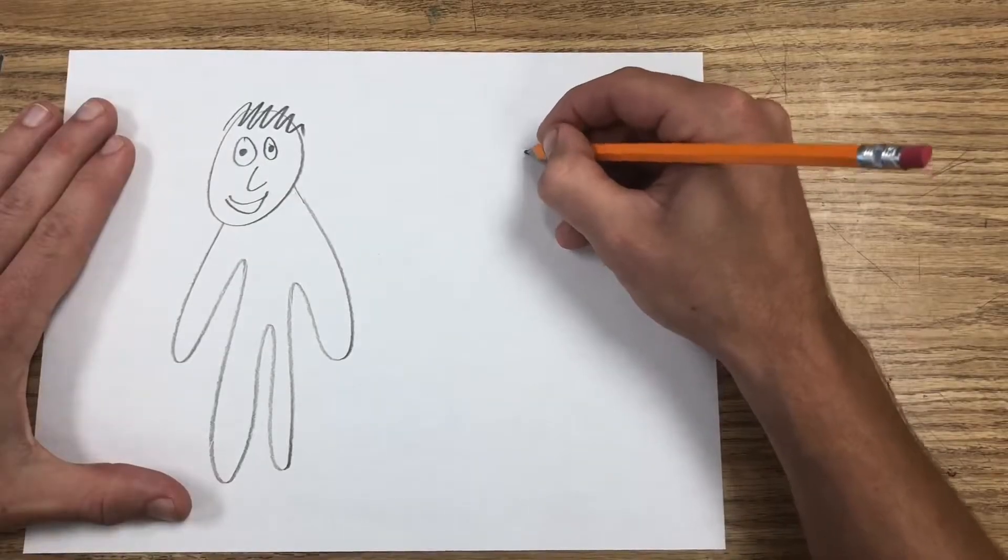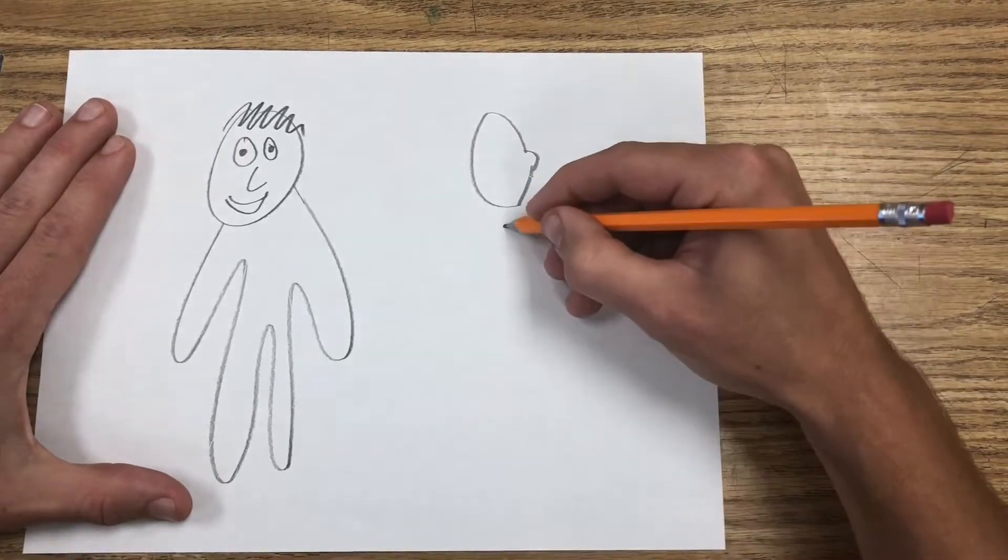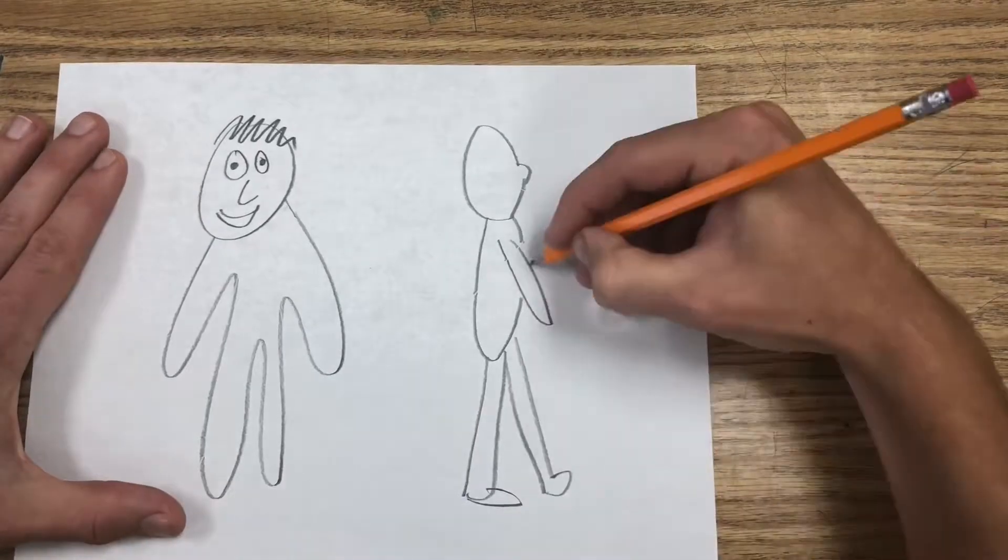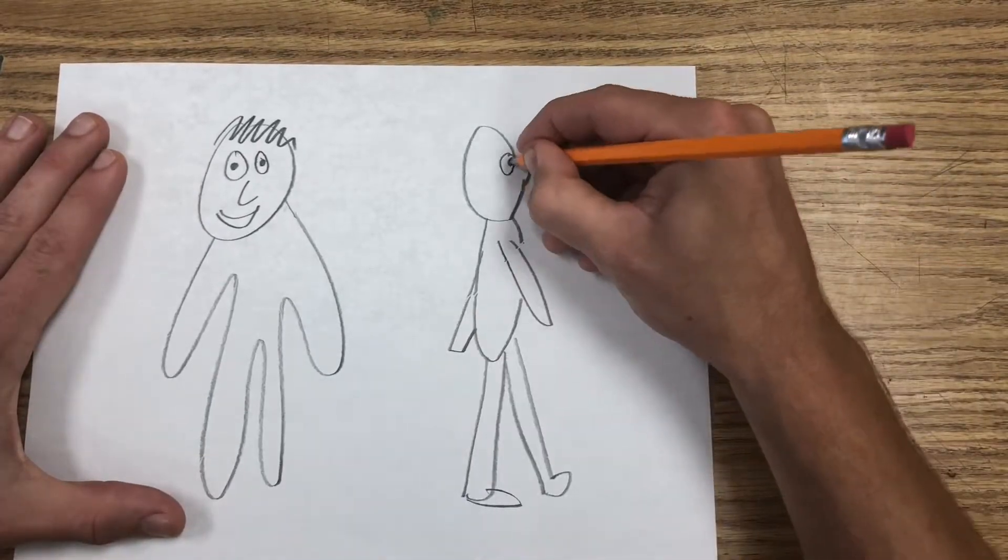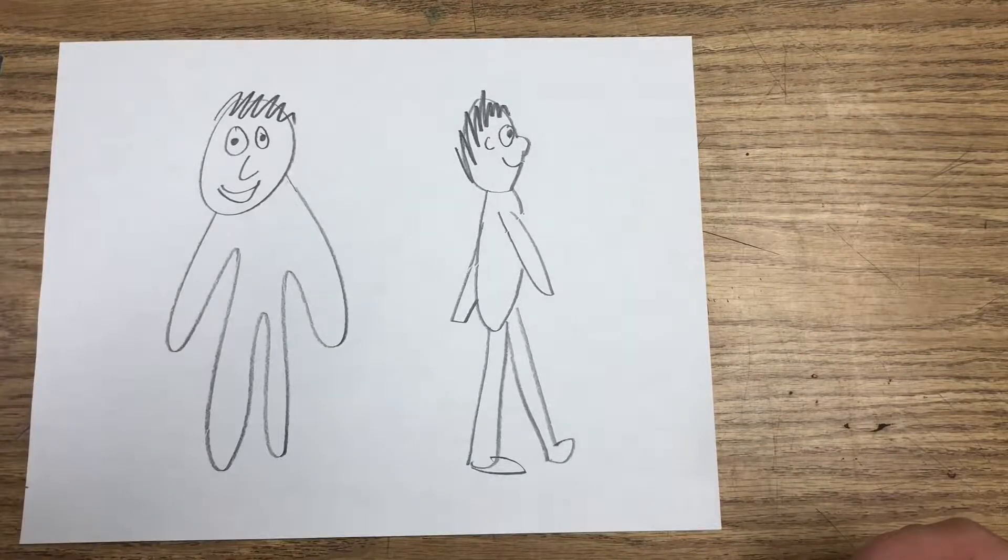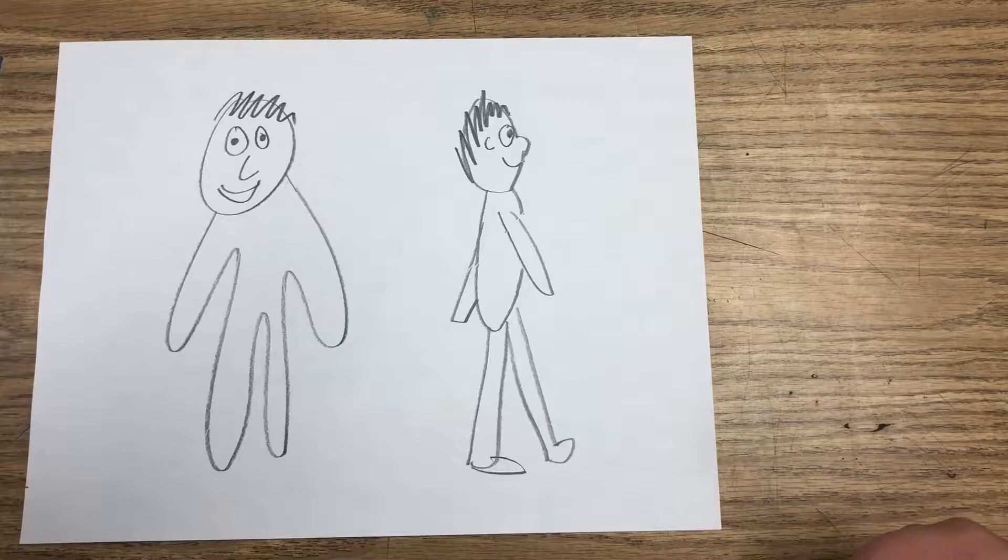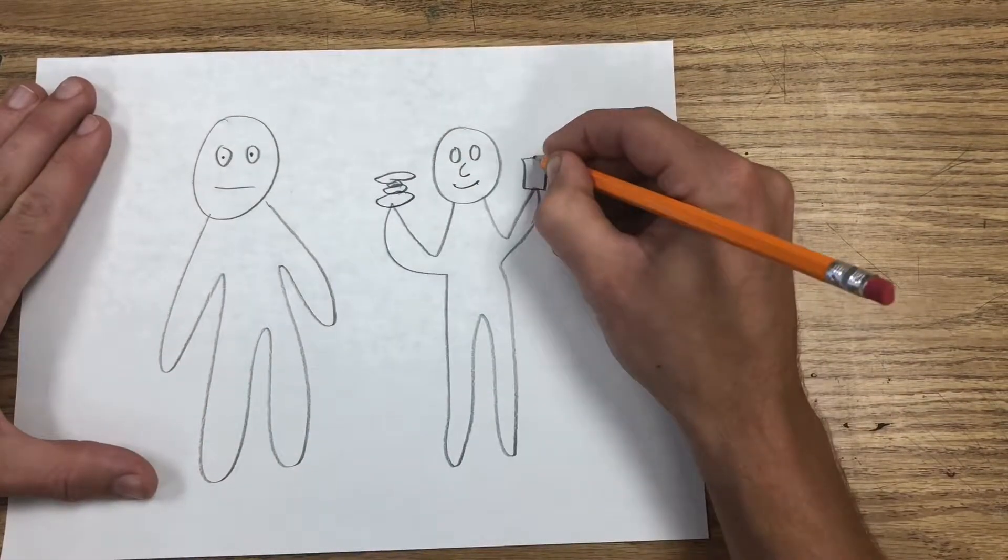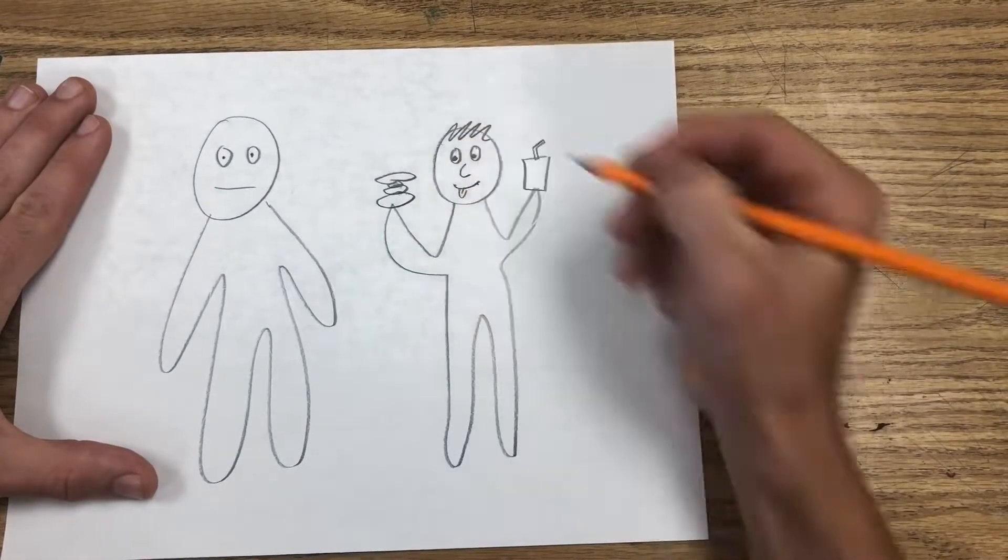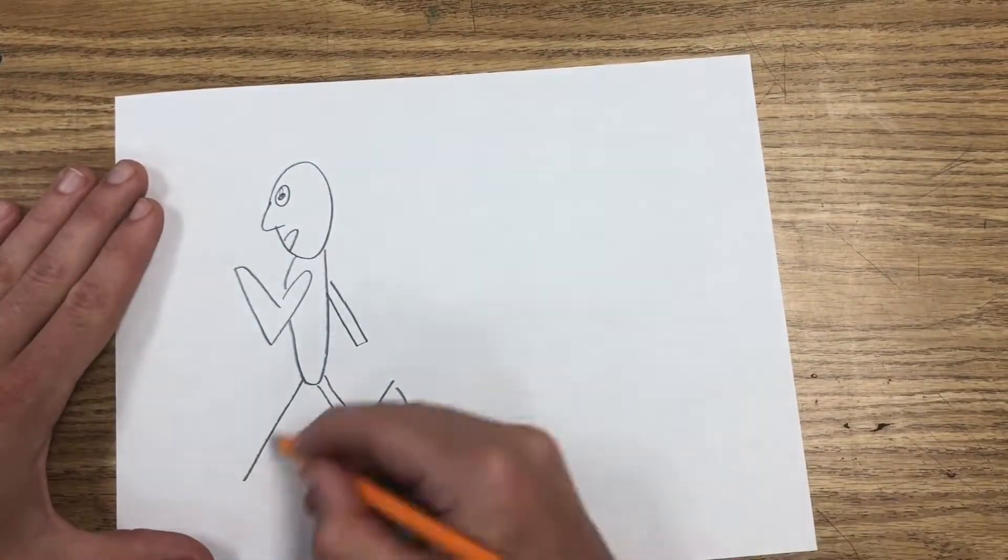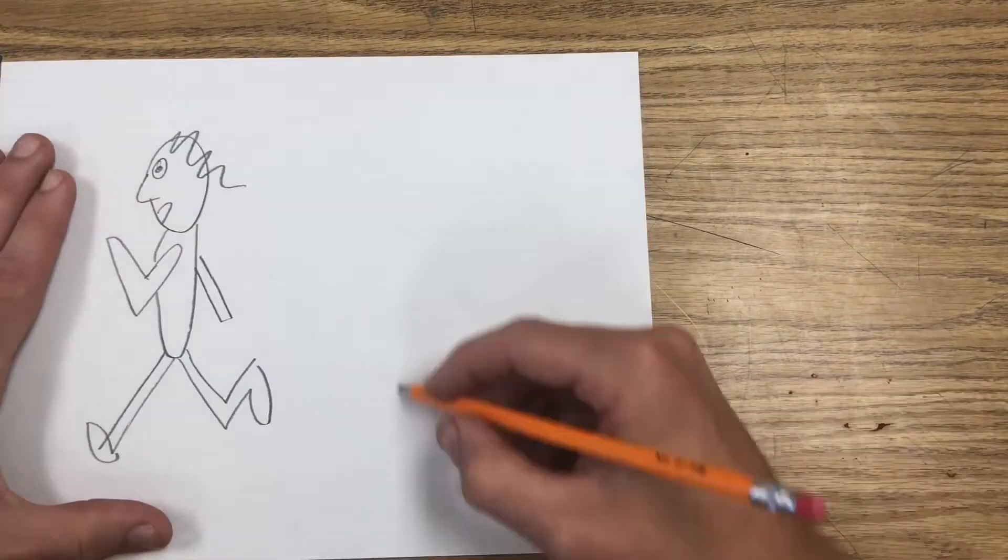Once you've mastered drawing simple characters that are not stick figures, try drawing characters in different positions. For example, the side view. Draw a bump for the nose on one side of the face, put the eye on the side of the face, and draw the arms and legs swinging, one in front and one slightly behind. The more complex positions you draw characters in, the better. For example, arms up holding some objects or one arm bent, one arm back, one leg bent, one leg straight for a running position.